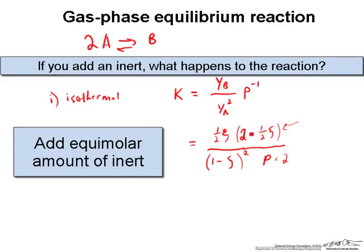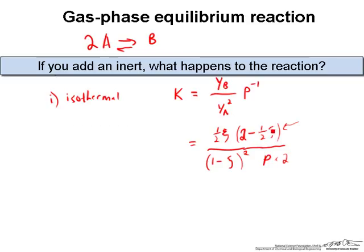If you just make up a number for squiggle and say that it's, for example, 0.5, then the ratio of this number, which is going to be 1.75, over the original number when this was 1, which would be 0.75, that's a number that's greater than 2, so the effect here is actually greater than the effect here. Adding the inert, in the case of an isothermal reaction, is going to decrease the extent of reaction because your numerator is increasing, and you therefore need to decrease squiggle in order to compensate for that when this K is constant because it's an isothermal reaction.